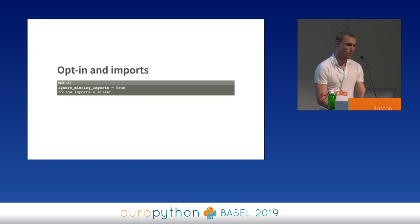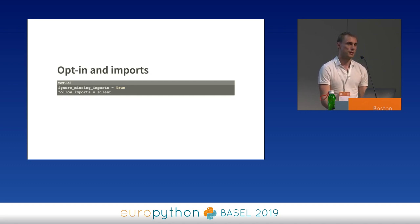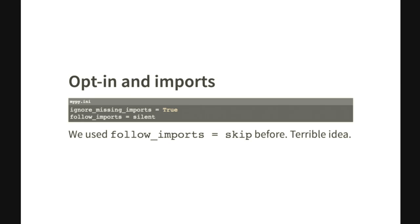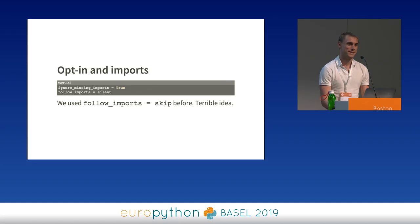When you go the opt-in route, you need to deal with imports because you are covering maybe just a few modules, but those modules might be importing other code which you're not ready to check yet. This is how you tell MyPy to not complain too much about other modules. A word of warning: the follow_imports directive has another option called skip. The documentation warns you not to use that. We did, and it was a terrible idea. Don't do it.